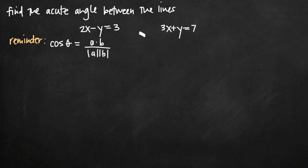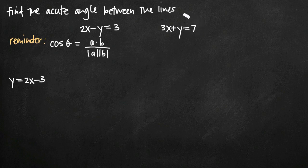Before we get started, let's talk visually about what we're looking at here. If we convert 2x minus y equals 3 to slope-intercept form, we add y to both sides and subtract 3 from both sides, and we get y equals 2x minus 3. If we do the same thing to the other equation and subtract 3x from both sides, we get y equals negative 3x plus 7.